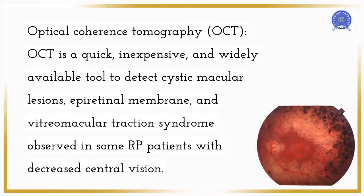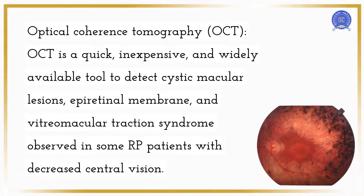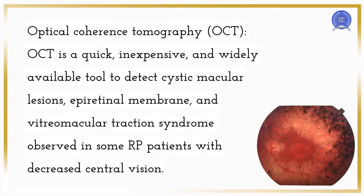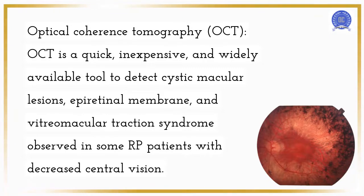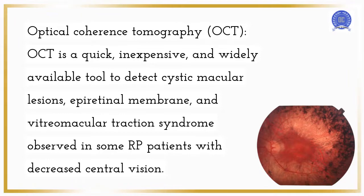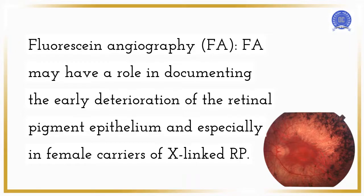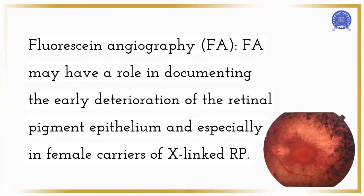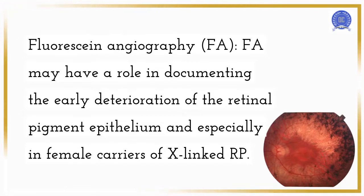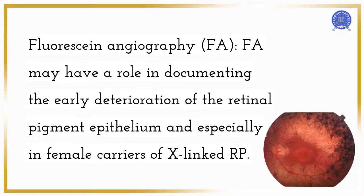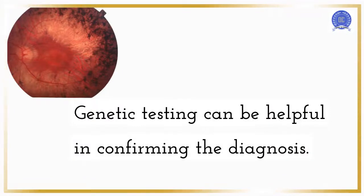Optical coherence tomography, OCT, is a quick, inexpensive, and widely available tool to detect cystic macular lesions, epiretinal membrane, and vitreomacular traction syndrome observed in some RP patients with decreased central vision. Fluorescein angiography, FA, may have a role in documenting the early deterioration of the retinal pigment epithelium, especially in female carriers of X-linked RP. Genetic testing can be helpful in confirming the diagnosis.